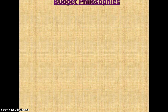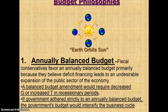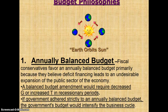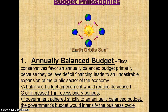What are the philosophies of the budget? Number one: annually balanced budget. Fiscal conservatives favor an annually balanced budget primarily because they believe deficit financing leads to an undesirable expansion of the public sector of the economy. A balanced budget amendment would require decreased government spending or increased taxes in recessionary periods. If government adheres strictly to an annually balanced budget, the government's budget would intensify the business cycle.